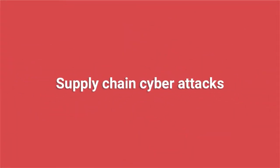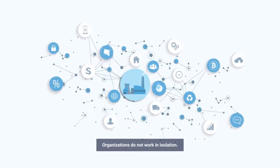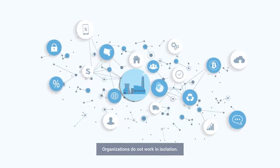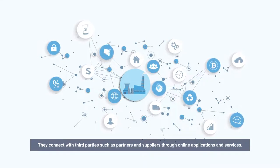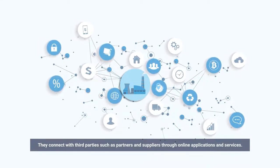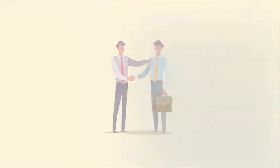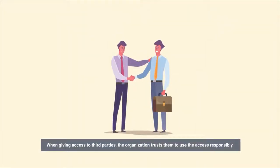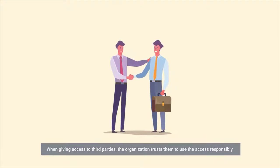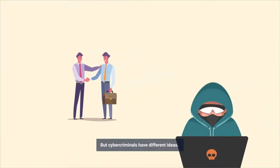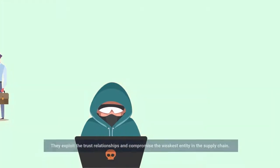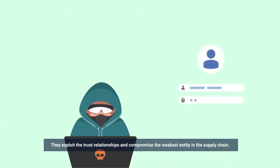Supply chain cyber attacks. Organizations do not work in isolation. They connect with third parties such as partners and suppliers through online applications and services. When giving access to third parties, the organization trusts them to use the access responsibly. But cybercriminals have different ideas — they exploit the trust relationships and compromise the weakest entity in the supply chain.